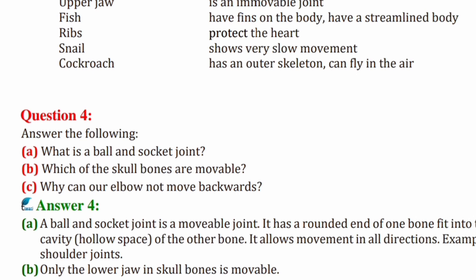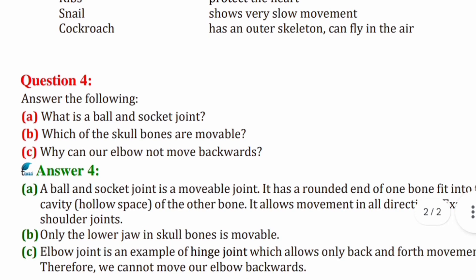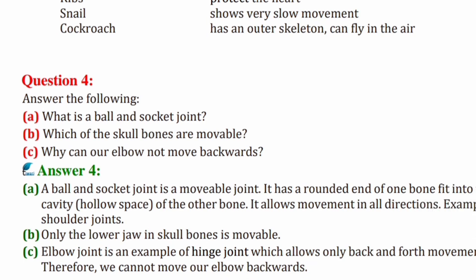(c) Why can our elbow not move backwards? Elbow is an example of the hinge joint and it allows only back and forth movement. Therefore, we cannot move our elbow backwards.